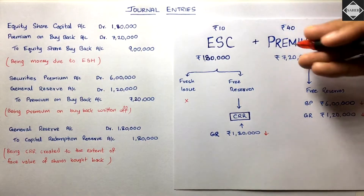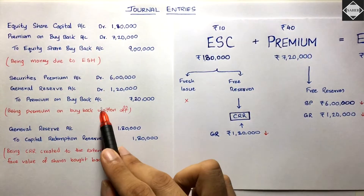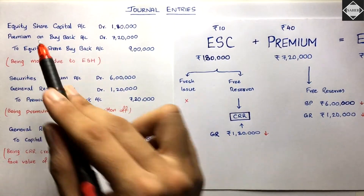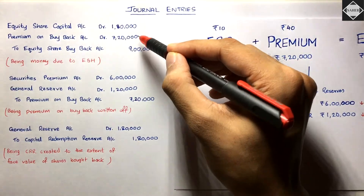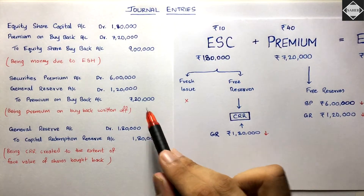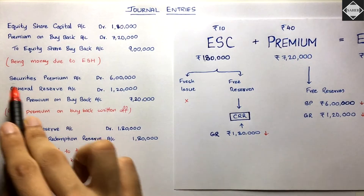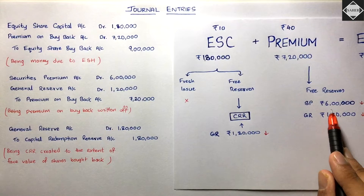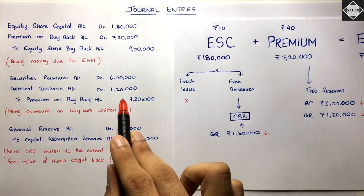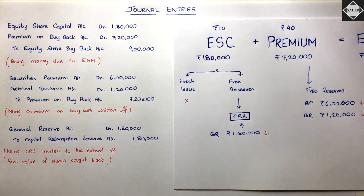Journal Entry 2 - Writing off Premium on Buyback: Debit Securities Premium Account ₹6,00,000; Debit General Reserve Account ₹1,20,000; Credit Premium on Buyback Account ₹7,20,000. Being premium on buyback written off.